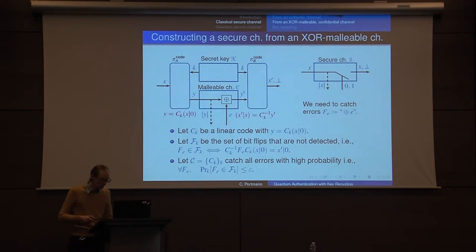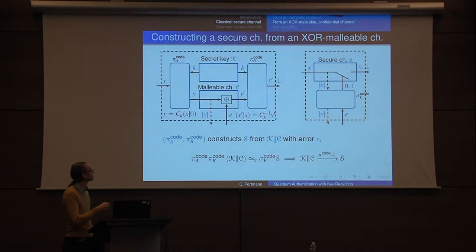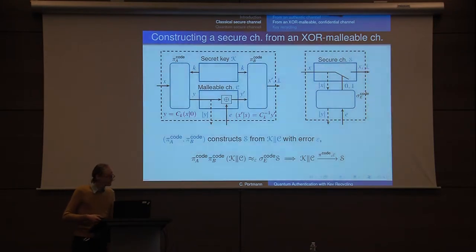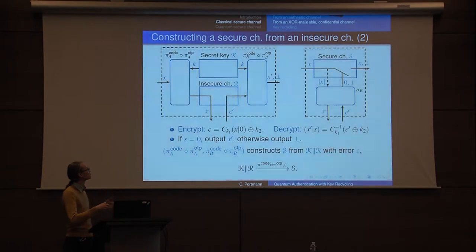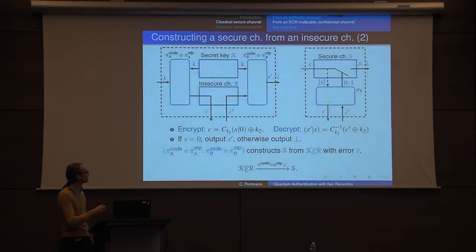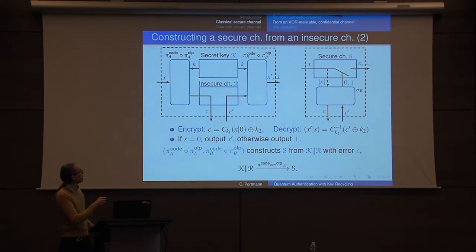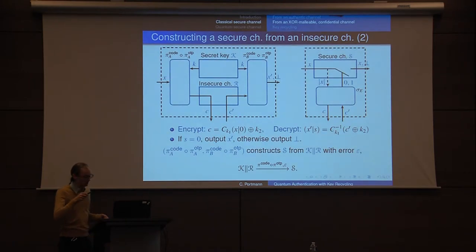We can find such families of codes. If we do this, we can show there's a small error ε when distinguishing the two systems, depending on how well our codes cover all the errors. So we compose our one-time pad with these codes. Alice gets a key split into two parts: she encodes using a code chosen by K1, then does the one-time pad. Decryption works in the obvious way — if after decryption we get syndrome zero we accept, otherwise we output an error. This is how we construct a secure channel from an insecure channel: not encrypt-then-authenticate, but code-then-encrypt.